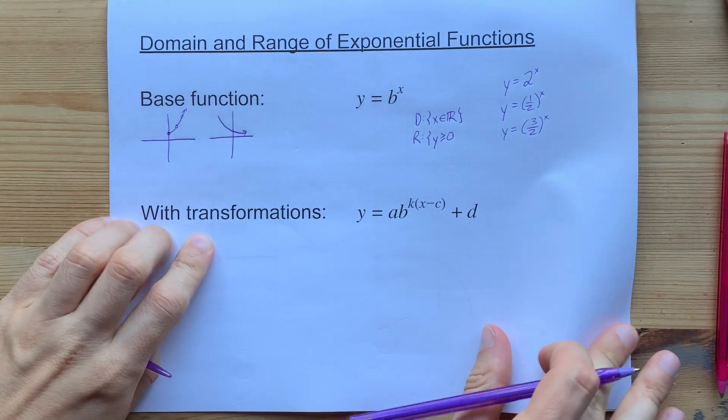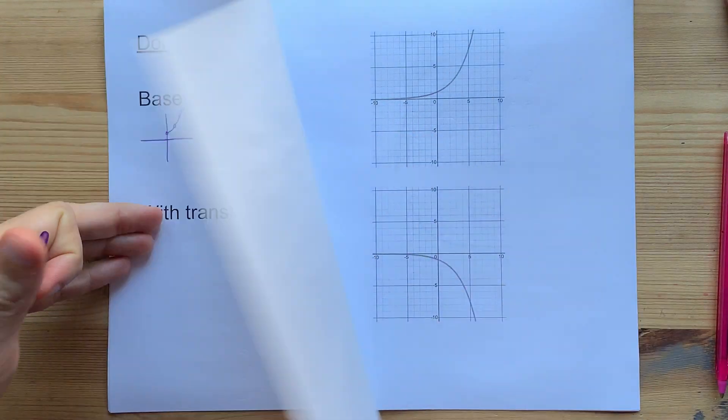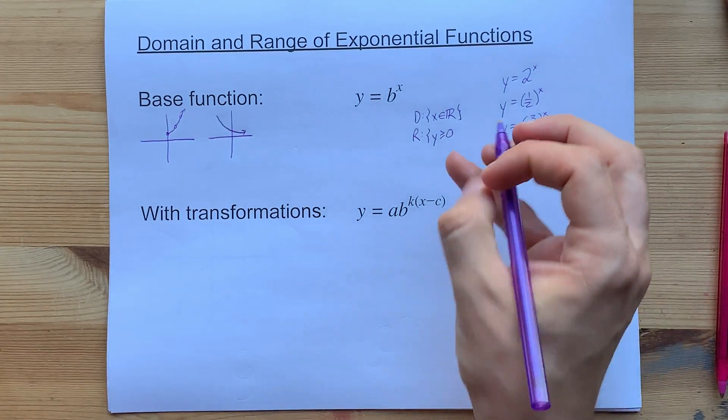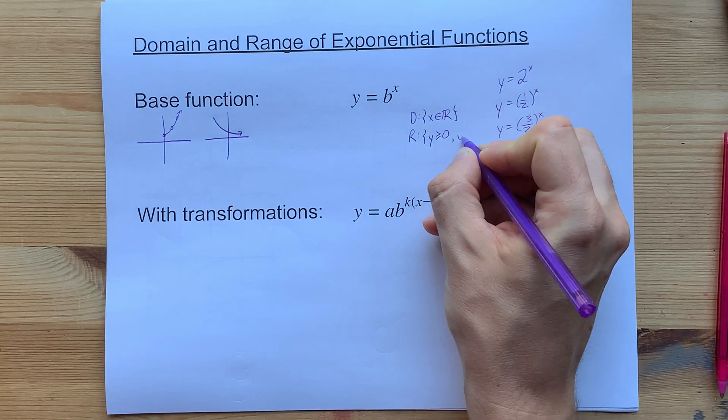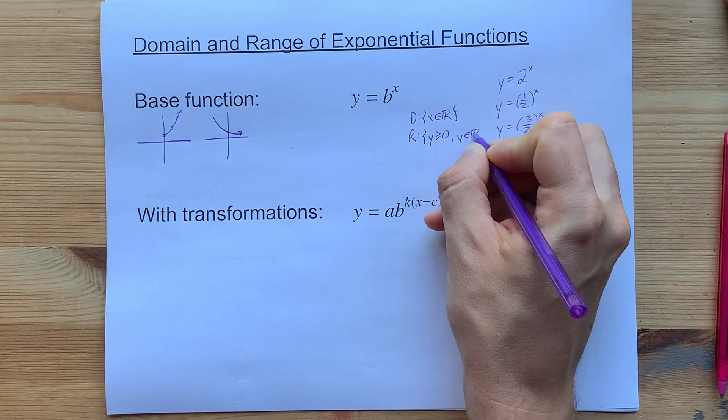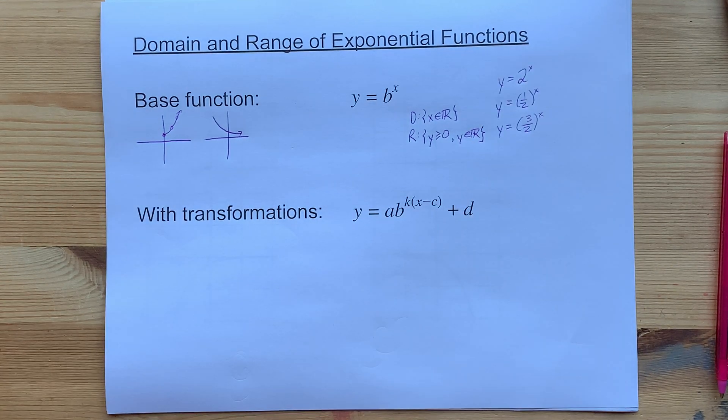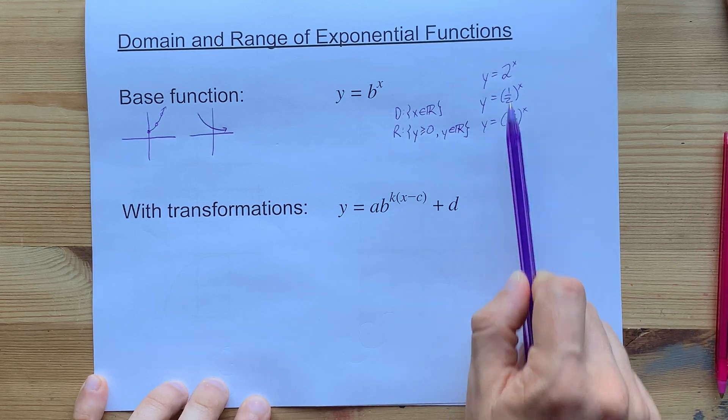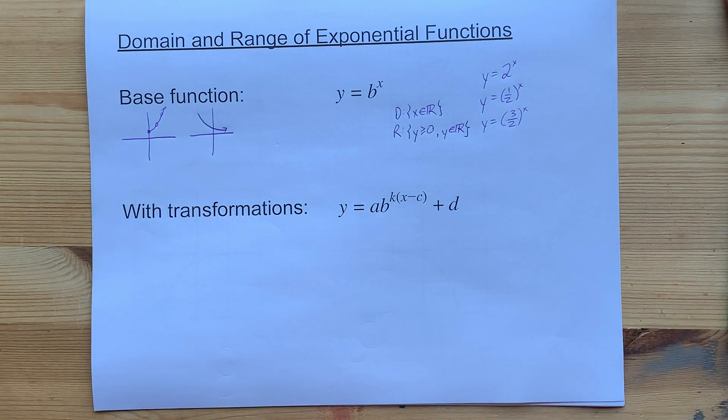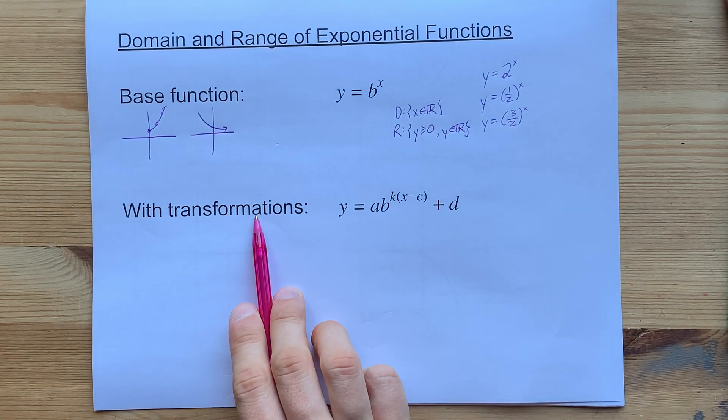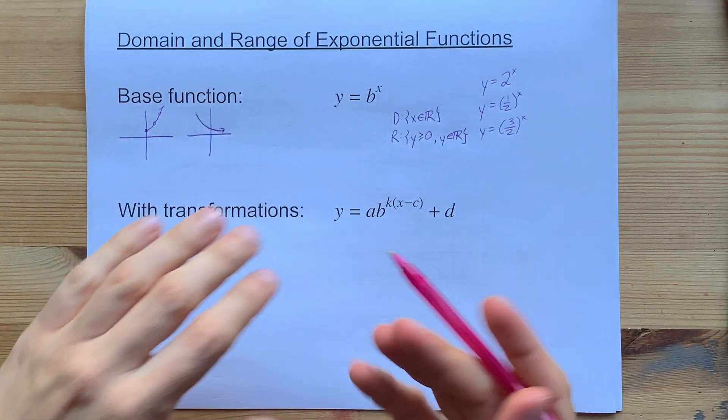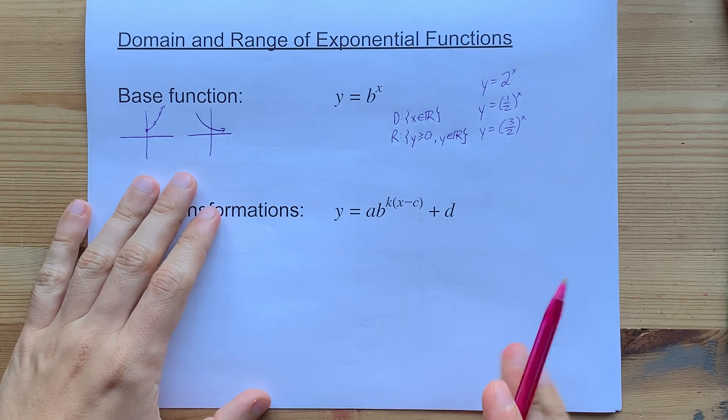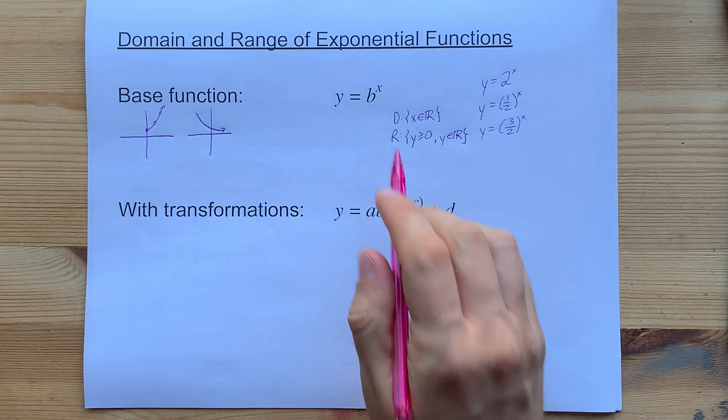the range is always going to be y greater than 0. There's something called a horizontal asymptote on exponential functions, and as long as there's no vertical shift, it's going to be at 0. You should write in y∈R as well, because y also has to be a real number. Now, that's just for the base function. Some number to the power of x. As soon as you start transforming it with stretches or compressions or shifts, even reflections making either a or k negative,